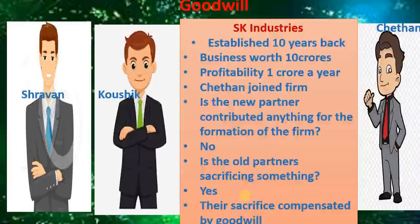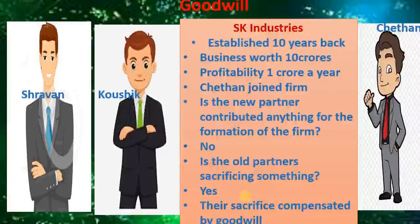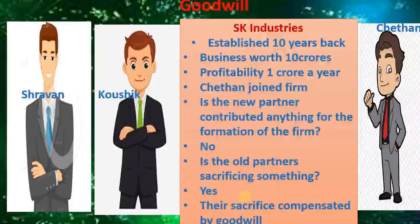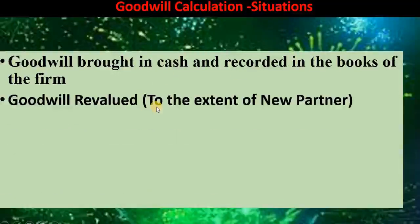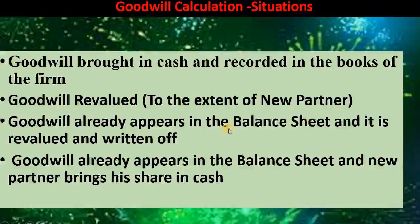We have learnt these concepts in our PU classes also, but you should note that it is a little different compared to our PU studies. We are going to adjust the goodwill in partners capital accounts only — we are not going to make any other adjustments. According to accounting standards, we adjust all goodwill in partners capital accounts only. There are 4 such situations: goodwill bought in cash and recorded in the books of the firm; goodwill revalued to the extent of the new partner; goodwill already appears in the balance sheet and it is revalued and written off; and goodwill already appears in the balance sheet and the new partner brings his share in cash.